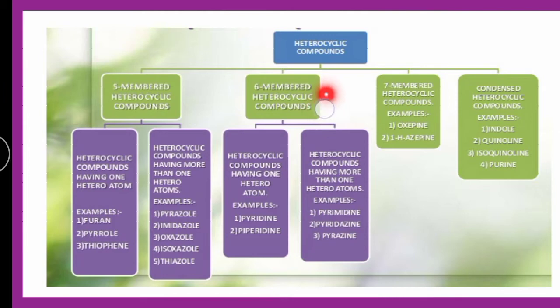For 6-membered heterocycles, the same sub-classification applies: those containing only 1 heteroatom — examples are pyridine and piperidine — and those containing more than 1 heteroatom — examples are pyrimidine, pyridazine, and pyrazine. For 7-membered heterocycles, there are oxypines and azepines. Examples of fused/condensed heterocycles include quinoline, isoquinoline, purine, and indole.